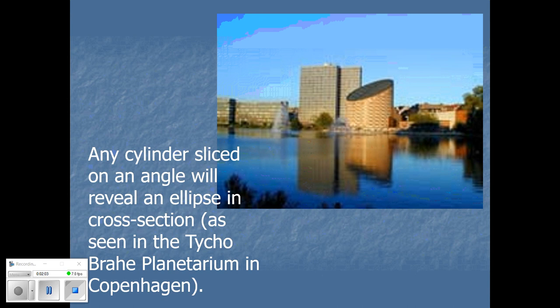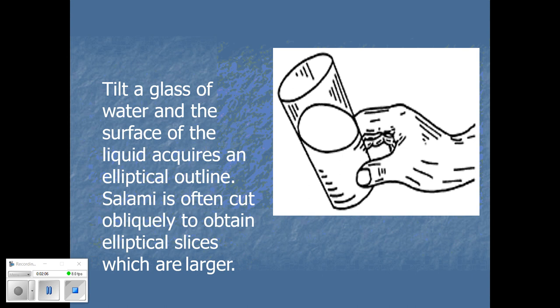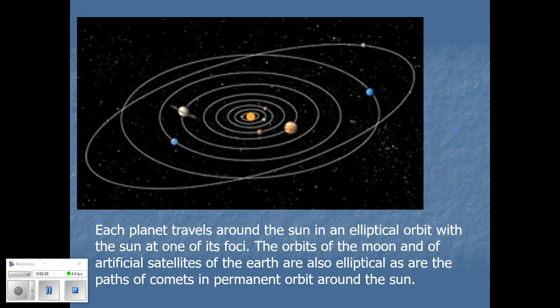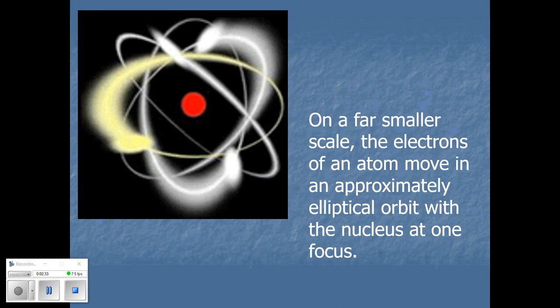This is a super cool building. When you tilt water, you will see the elliptical outline. Salami is often cut in elliptical slices — I feel like a general chef cutting things into elliptical slices makes it more appealing to the eyes. And we have science, which is super magnified here.